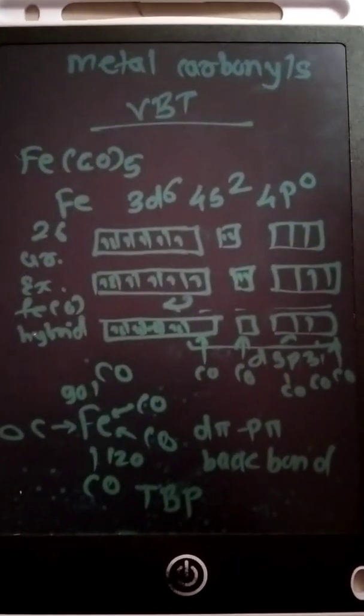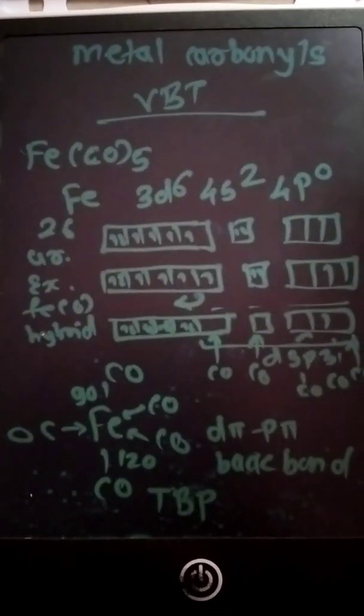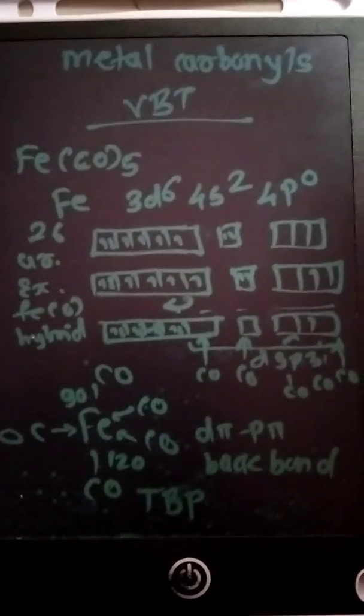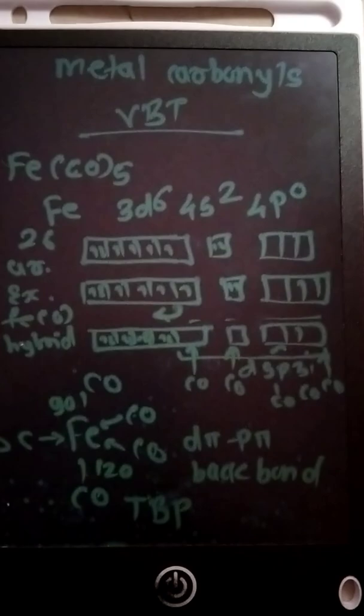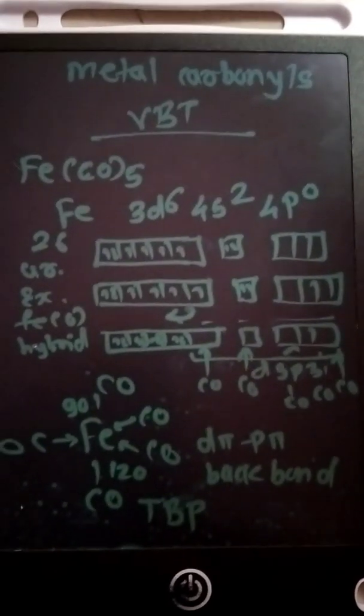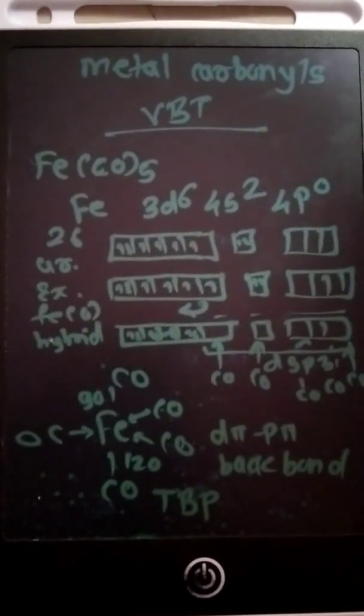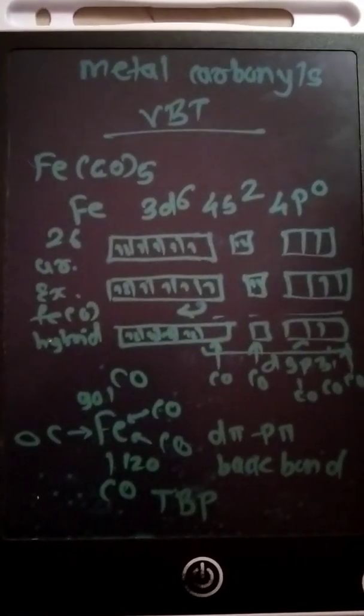Hello students, today we'll learn a very interesting concept about organometallic compounds, about the structure and bonding based on valence bond theory. We have to study their hybridization, structures, and the special bonding that is d-pi-p-pi bonding or back bonding present in organometallic compounds called metal carbonyls.